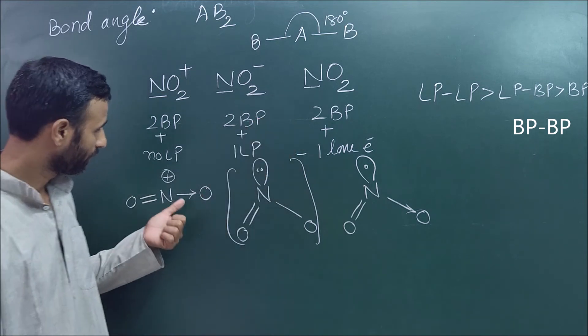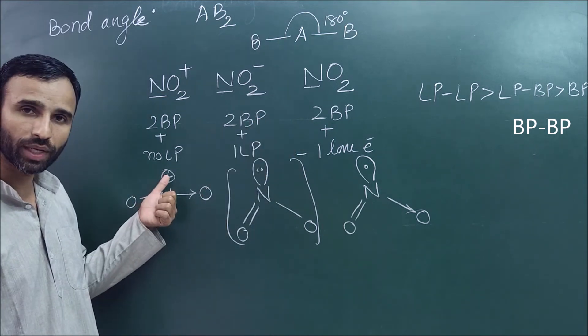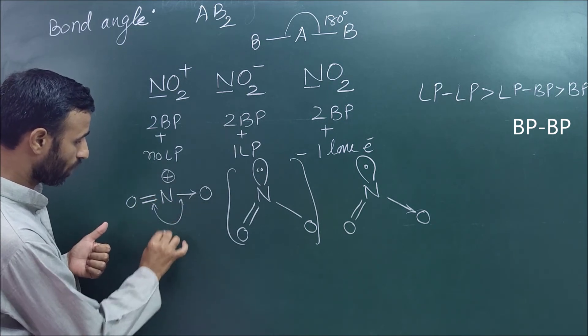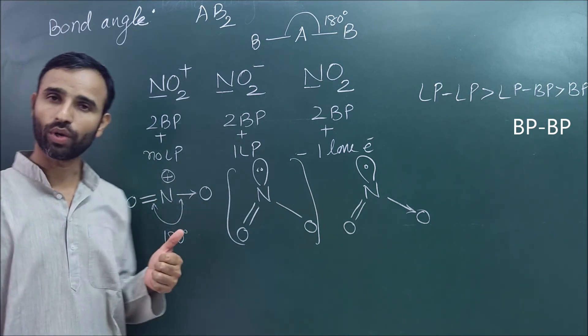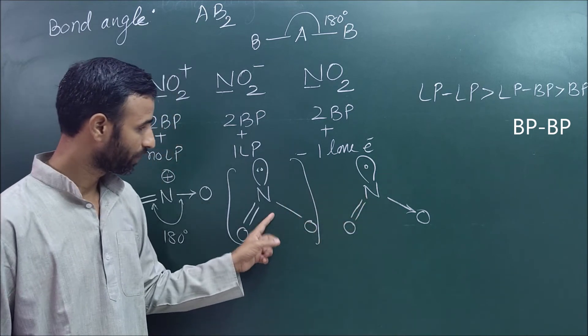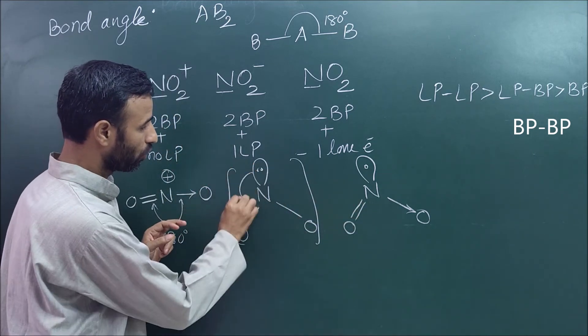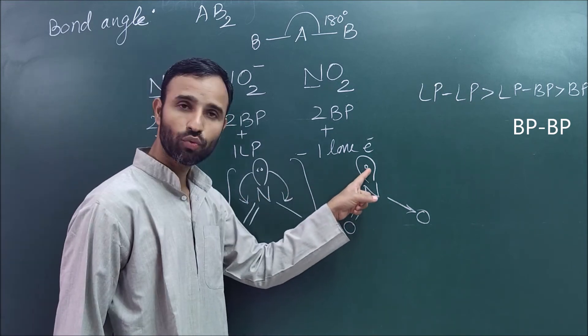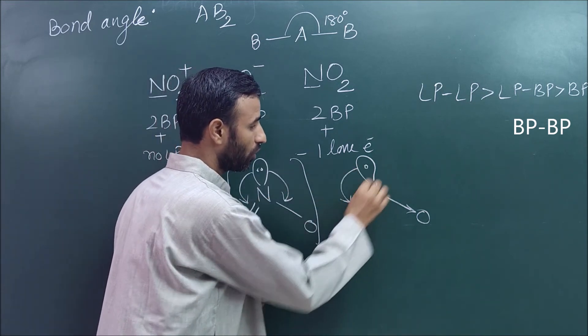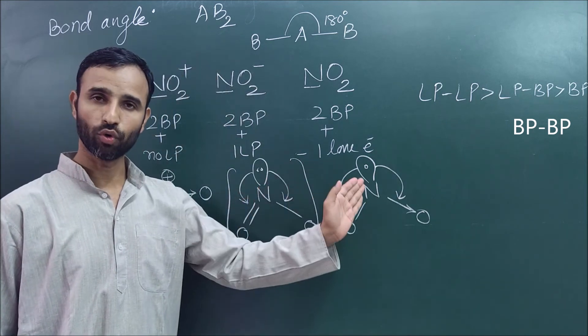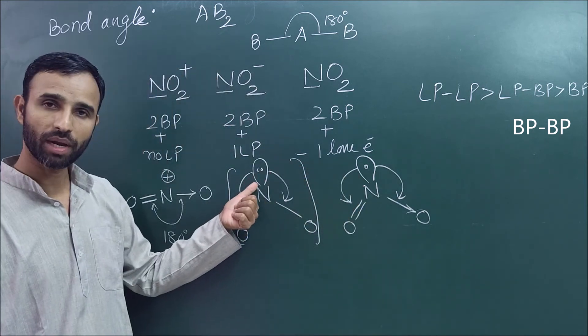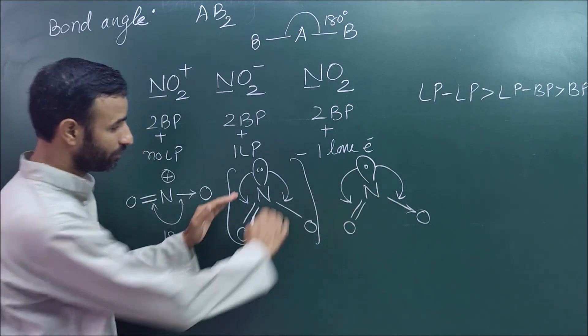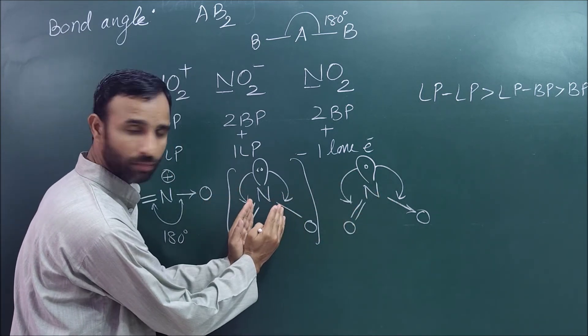So now you can see, in this case there is no lone pair and only two bond pairs, so bond angle is 180. But if you see, there is one lone pair, lone pair repels bond pair. There is one lone electron that also repels, but where repulsion is more? Lone pair repels more than lone electron. That's why they are bent more than this.